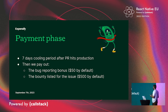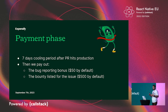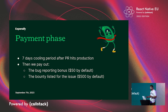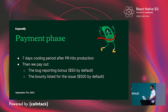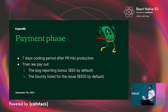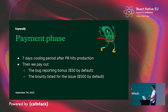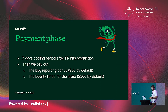Last is the payment phase. After the pull request has been tested, merged, and has been on production for seven days, we initiate payouts. The base pay is $50 for bug reporting and $500 for fixing the issue.